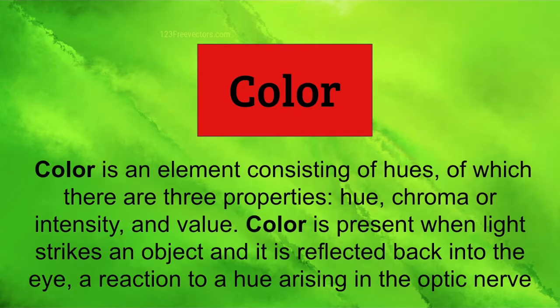Color. Color is an element consisting of hues of which there are three properties: hue, chroma or intensity, and value. Color is present when light strikes an object and is reflected back into the eye. A reaction to a hue arises in the optic nerve. That is the basic definition for color.